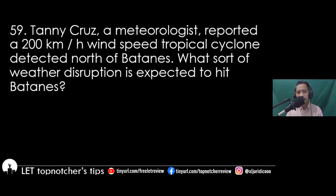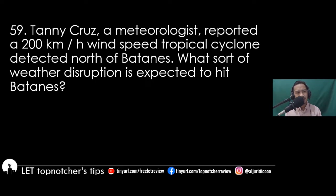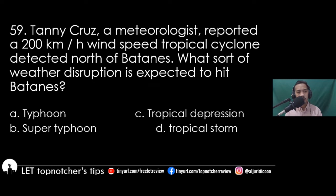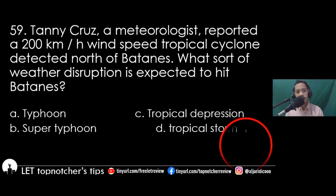Item 59: Tani Cruz, a meteorologist, reported a 200 km per hour wind speed tropical cyclone detected north of Batanes. What sort of weather disruption is expected to hit Batanes? A) typhoon, B) super typhoon, C) tropical depression, D) tropical storm. The best answer is letter A, typhoon.